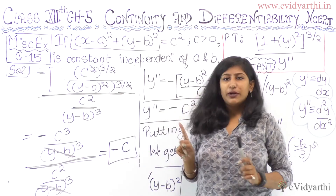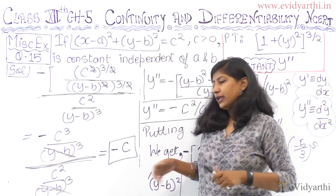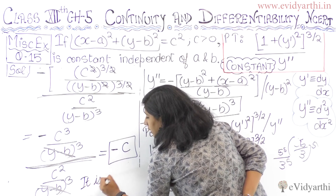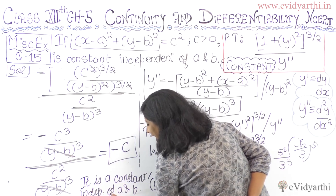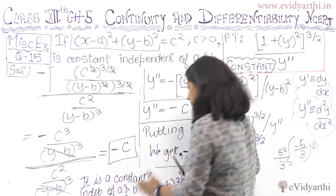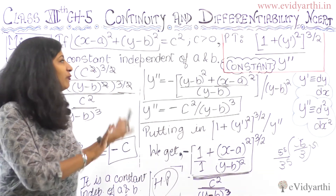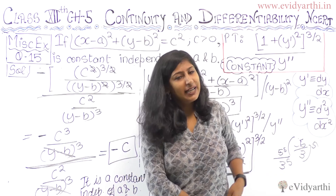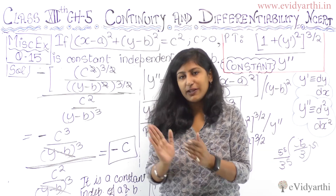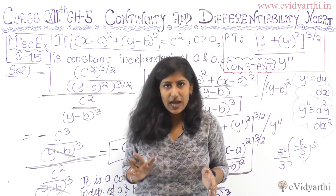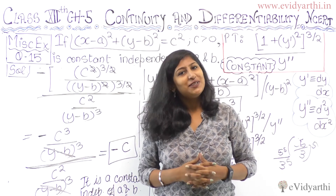Yes — the result is minus c, and a and b are not present. It is a constant independent of a and b. Hence proved. That's our work — hence proved. Take a screenshot and see it. Hopefully it was a little lengthy but I told you every step and every calculation, so you can do this question and understand it properly.